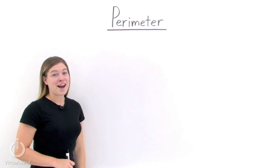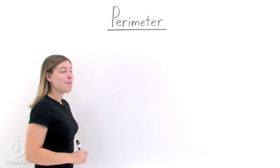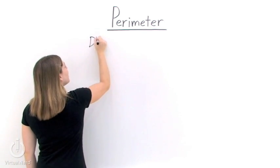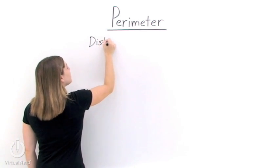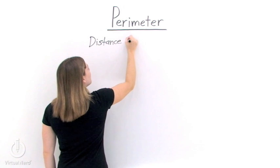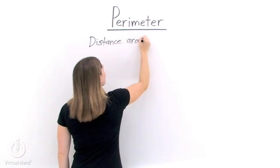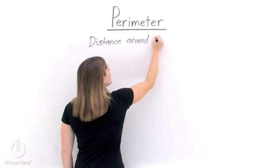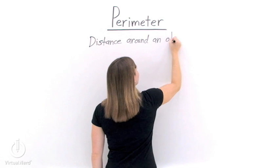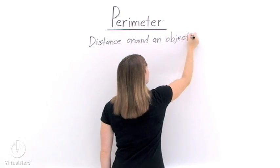What is the perimeter, and how do we find it? The perimeter of a two-dimensional object is the distance around that object. If we want to find the perimeter, all we need to do is add up the lengths of each one of the sides of that object.